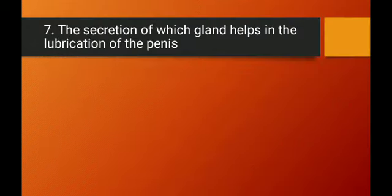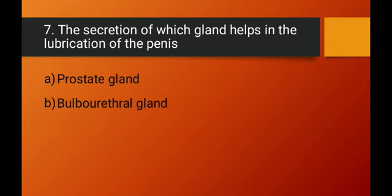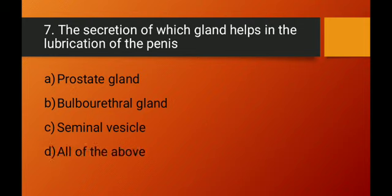Question number seven: the secretion of which gland helps in the lubrication of the penis? There are three types of glands in the male reproductive system: seminal vesicles, prostate gland, and bulbourethral glands (also called Cowper's glands). The bulbourethral glands' secretion is responsible for lubrication, helping to avoid friction between the vagina and penis during mating. Option B — bulbourethral gland — is the right answer.